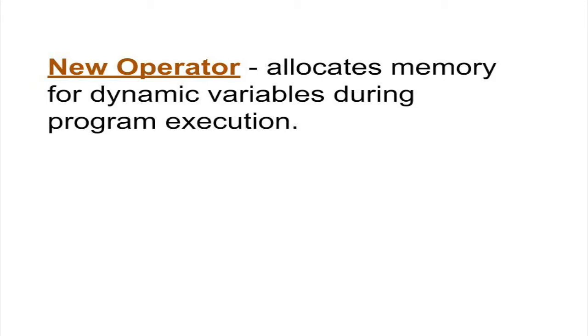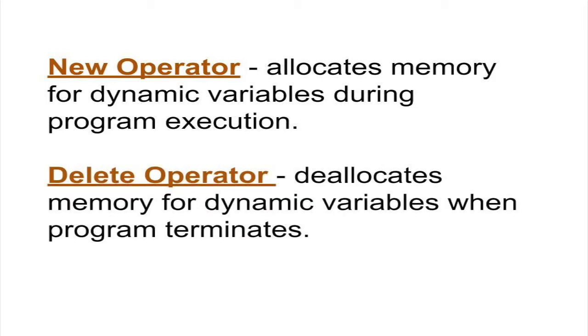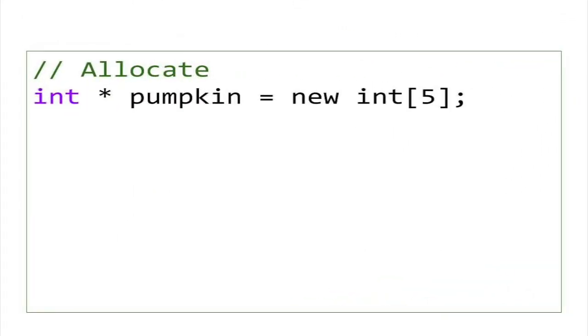Pointers are essential to instantiating objects during runtime. But since C++ doesn't provide automatic garbage collection, you will have to delete your dynamic variables programmatically. If you create an array dynamically, it's important to free up this memory once the program terminates.